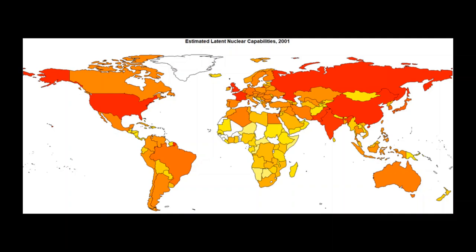I want you to focus in on North Korea. It's got a yellowish-orange tint — more capable than most of Africa, but less capable than Canada, Mexico, Brazil, Argentina, Australia, Japan, South Korea, and basically all of Europe. And this is in 2001, just five years before North Korea developed a nuclear weapon.